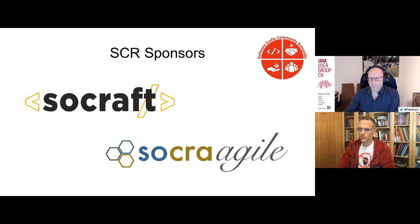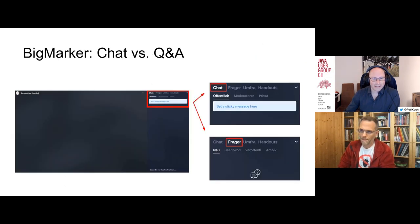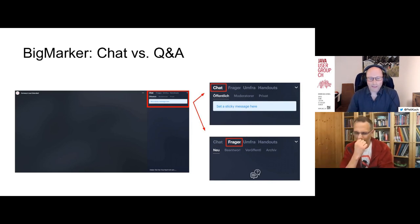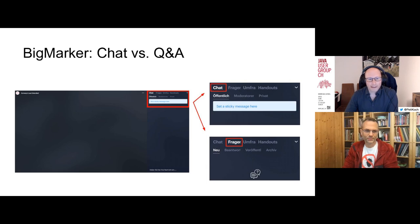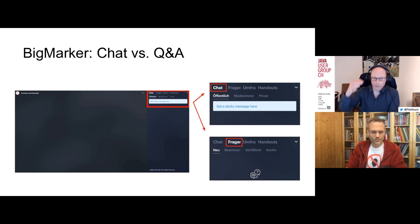For attendees, you're on the BigMarker webinar platform. You can chat with each other — for example, share where you're based from. Johan is from Grenoble in France, so it's a bit international tonight. There's also a Q&A tab where you can post questions. We'll pick them up and try to answer them during the talk. Please vote on questions so the best ones bubble up to the top.